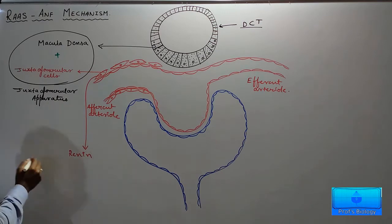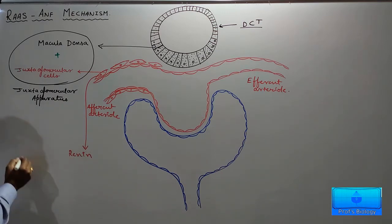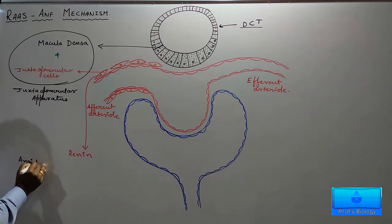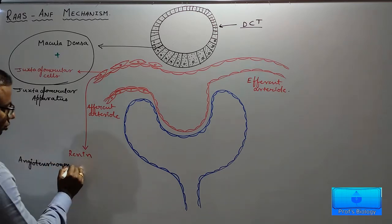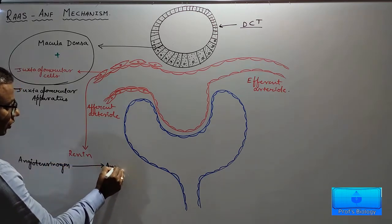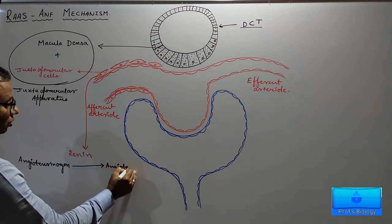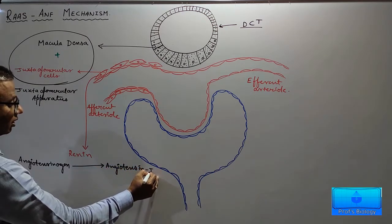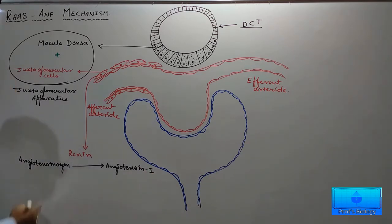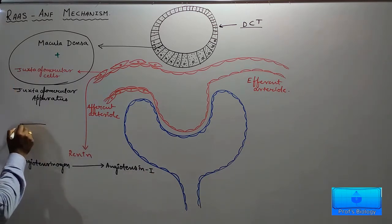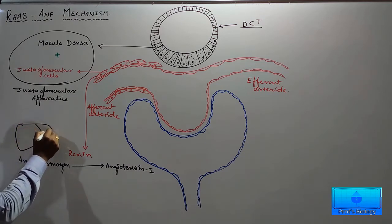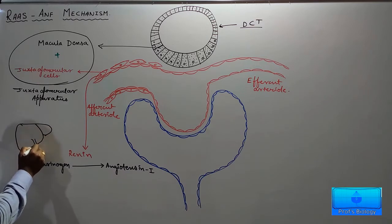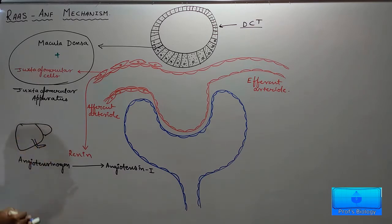This renin converts a substance called angiotensinogen into angiotensin 1. Angiotensinogen is produced by the largest gland of our body, which is the liver.